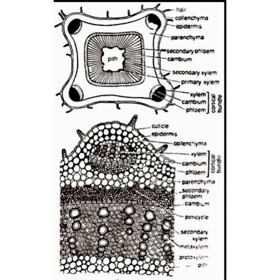The fourth one is the endodermis, but in the case of Nyctanthes it is not well developed, so you can note that the endodermis is not well developed. The fifth one is the pericycle. It is in the form of sclerenchymatous patches — you can see in the figure that the pericycle is in the form of sclerenchymatous patches.